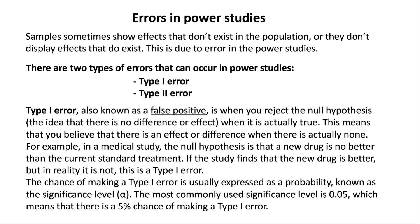Errors in power studies. Samples sometimes show effects that don't exist in the population, or they don't display effects that do exist. This is due to error in the power studies. There are two types of errors that can occur in power studies: Type 1 error and Type 2 error.